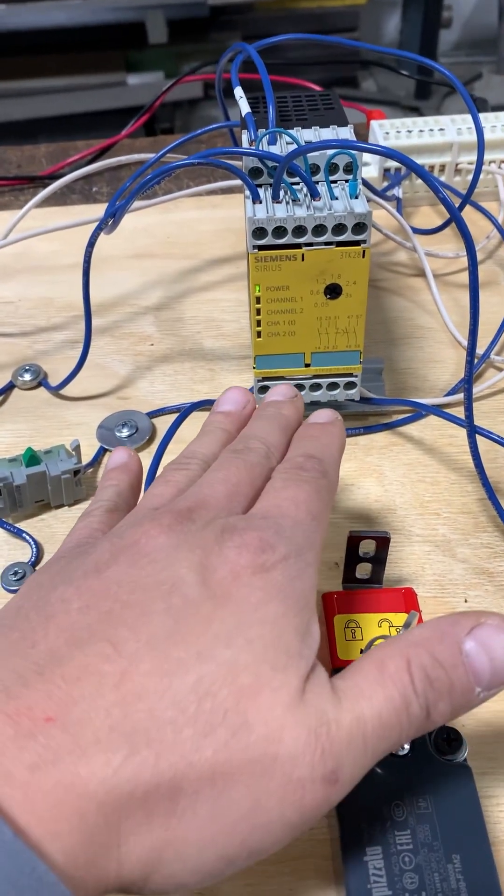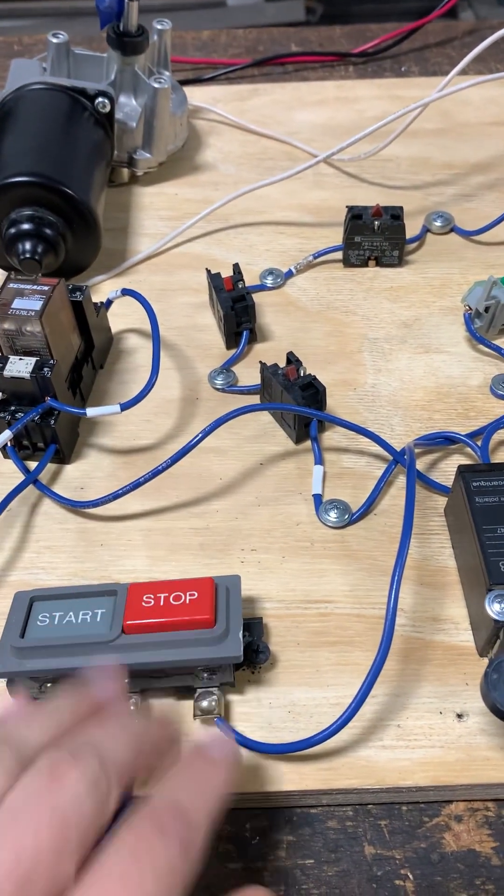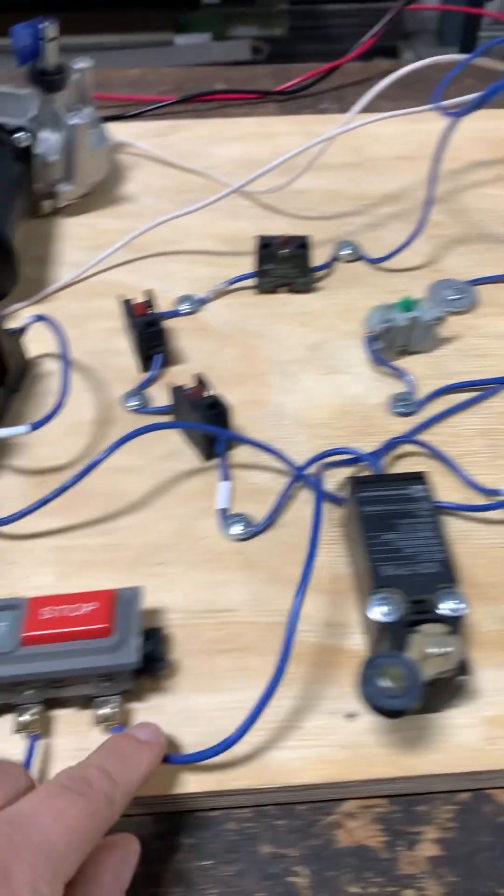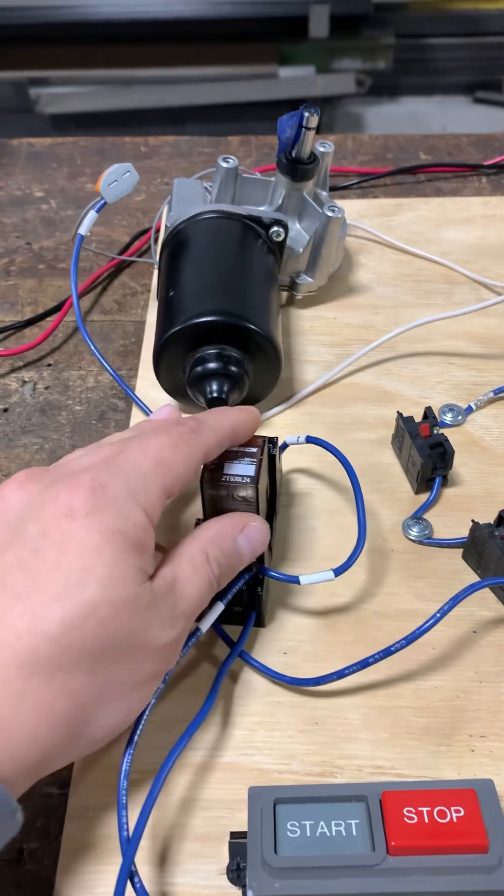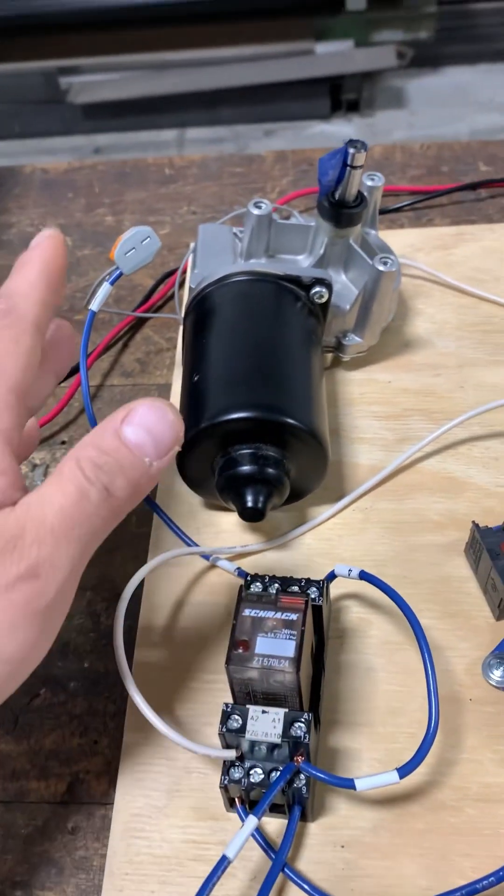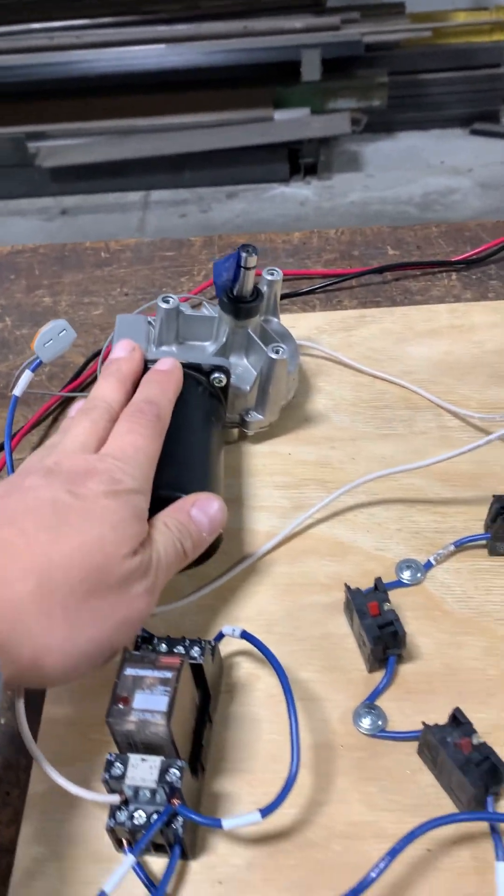The safety relay then closes another normally open set of contacts from the relay over to the stop/start. You have power coming from the safety relay into the stop, coming out from the start, then energizing a relay. And then this ice cube relay is going to turn on this DC motor.